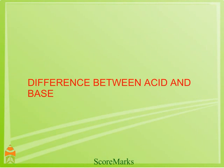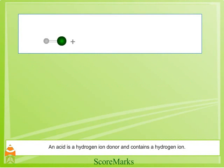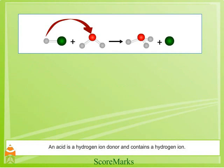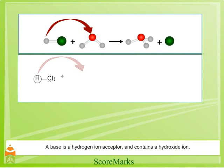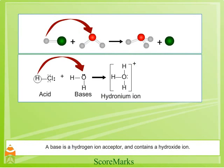Difference between acid and base. An acid is a hydrogen ion donor and contains a hydrogen ion — that is HF, hydrofluoric acid; HCl, hydrochloric acid; HNO3, nitric acid. A base is a hydrogen ion acceptor and contains a hydroxide ion.